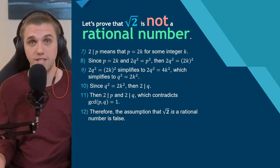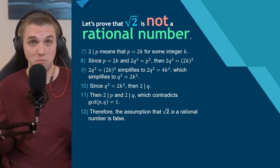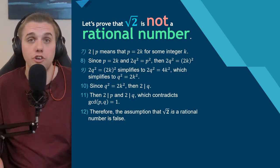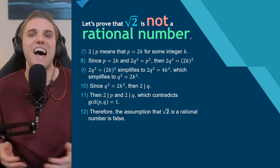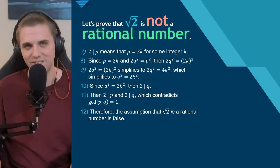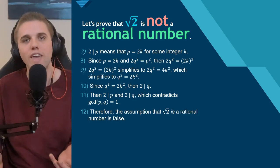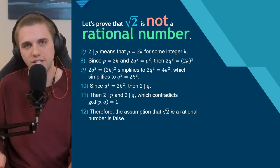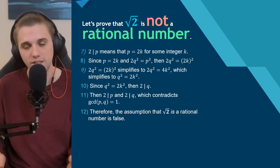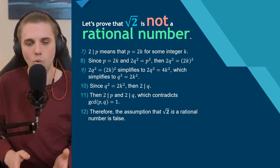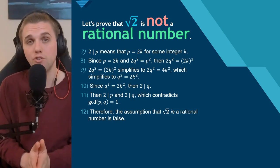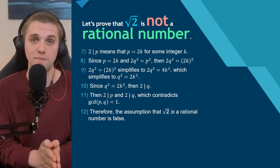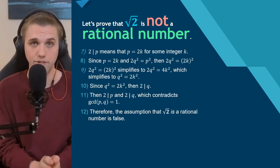Then what is it? We call it an irrational number and we just decide that the object exists — in the same way we decided imaginary numbers exist. In many ways, irrational numbers are just as fake as imaginary numbers.